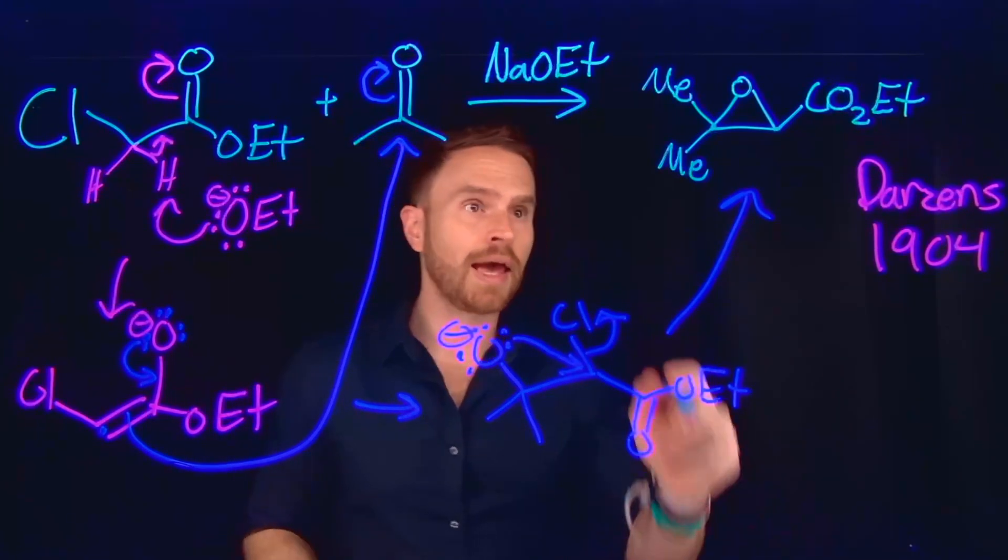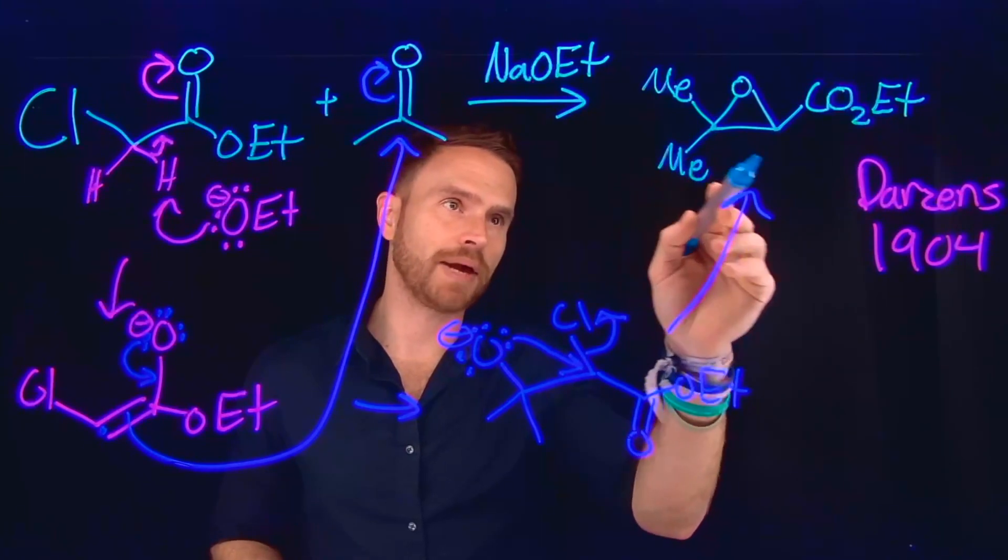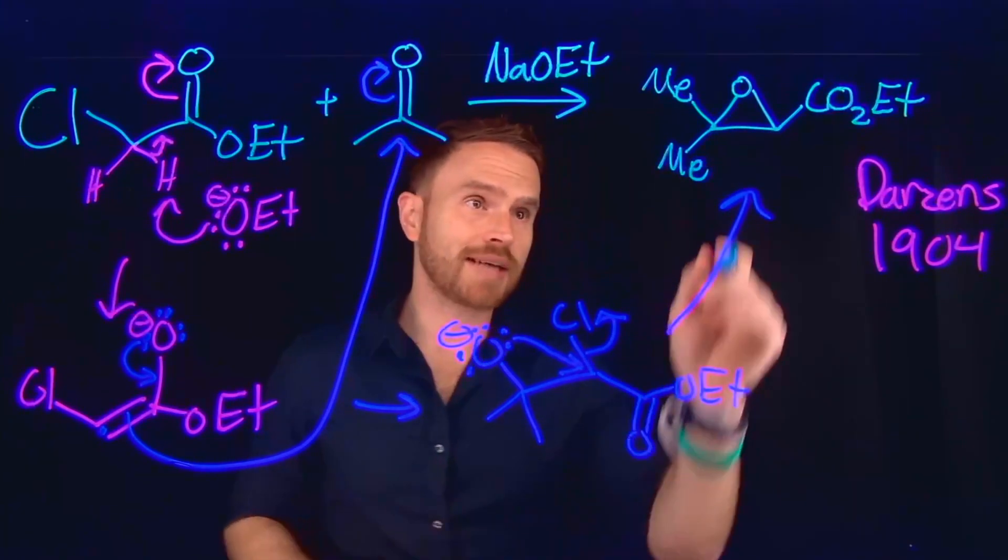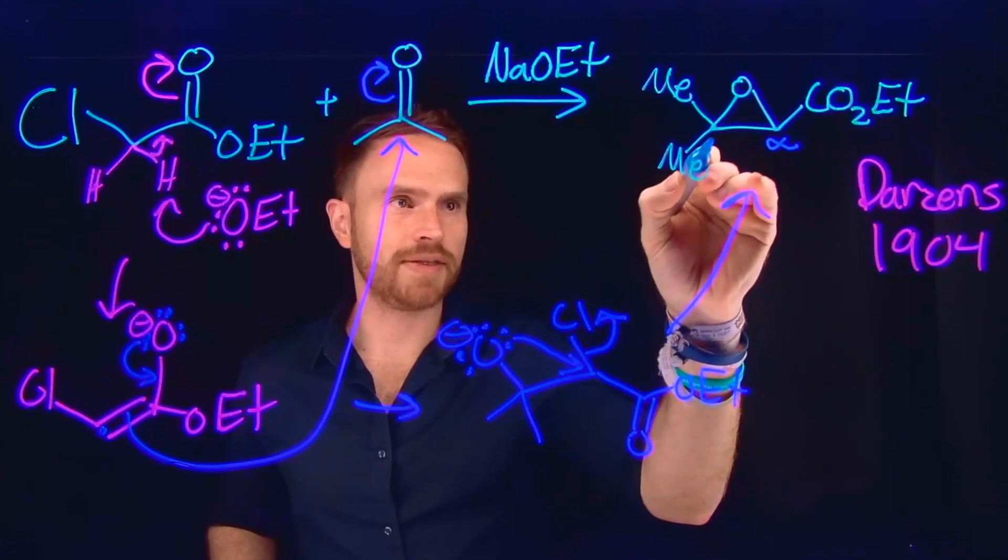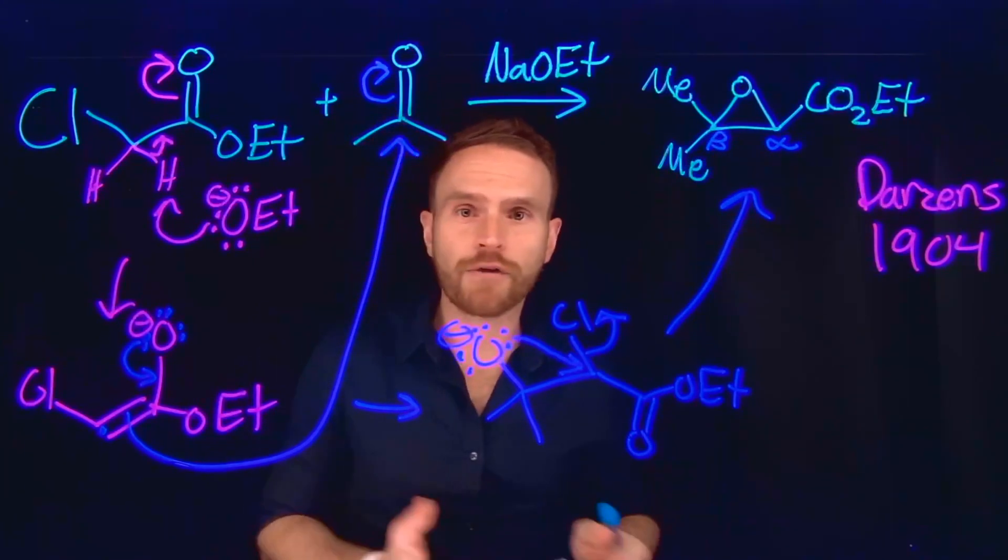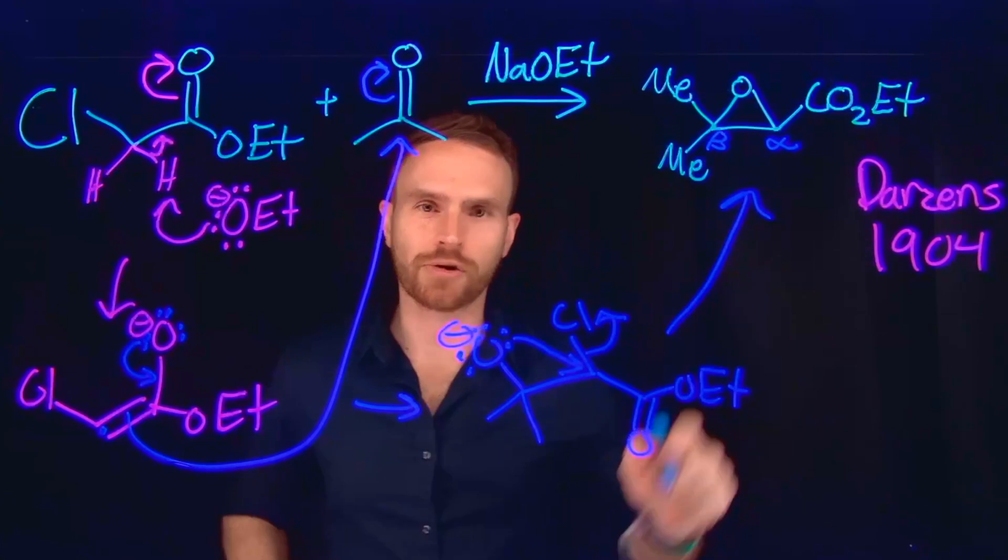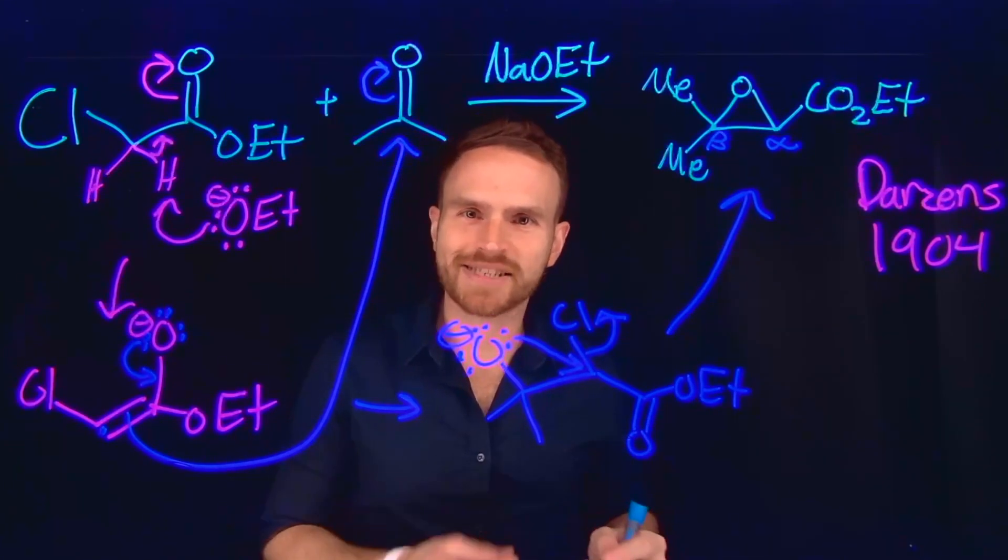This generates this alpha-beta epoxy ester. And this alpha-beta epoxy ester is called that because this would be the alpha position and this would be the beta position. So alpha-beta epoxy ester, or also what's known as a glycitic ester.